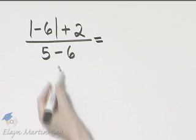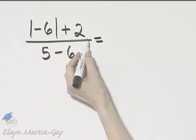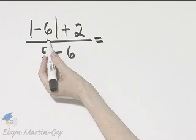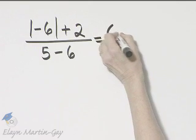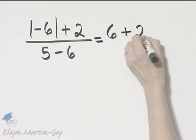In the numerator, I have the absolute value of negative 6 plus 2. Let's evaluate the absolute value of negative 6. It is 6, and then I still have plus 2.